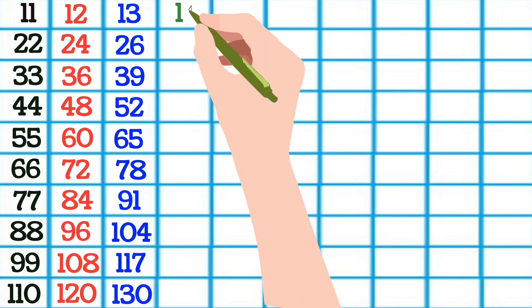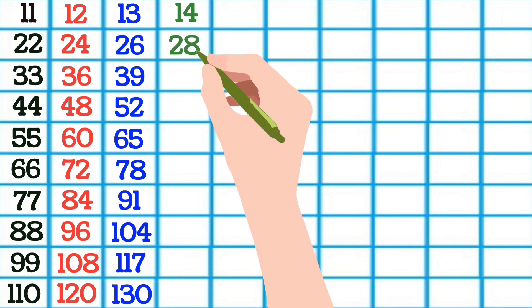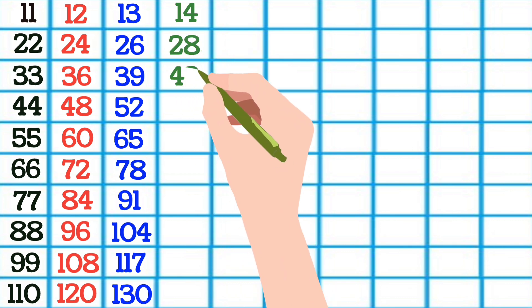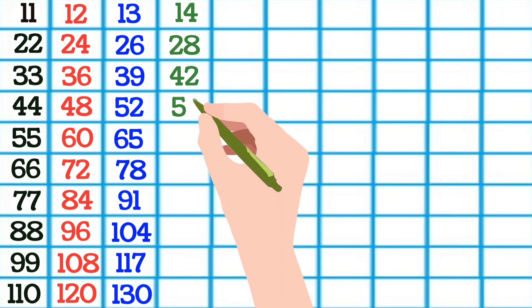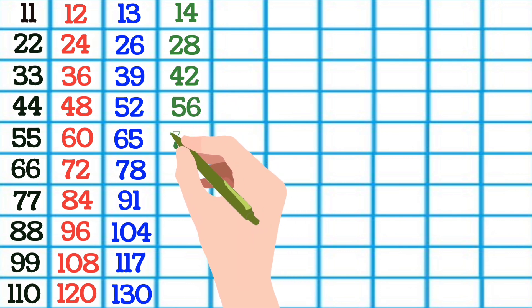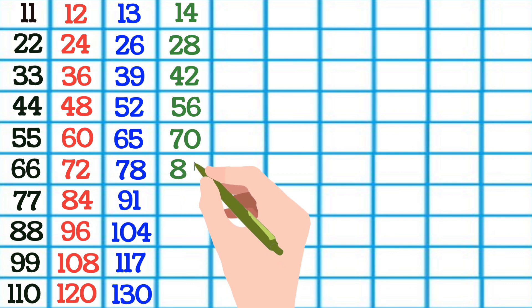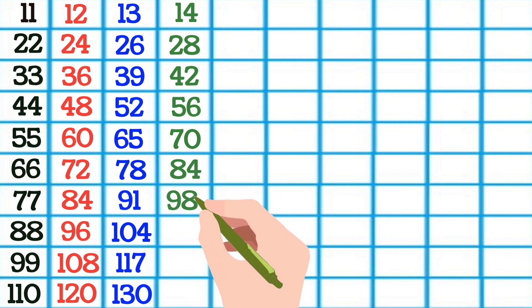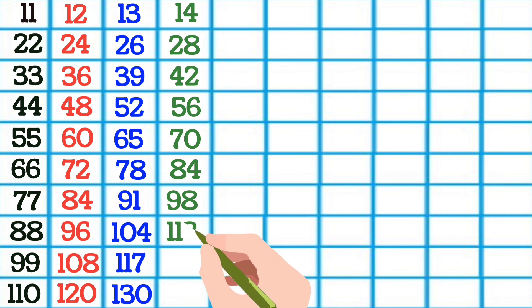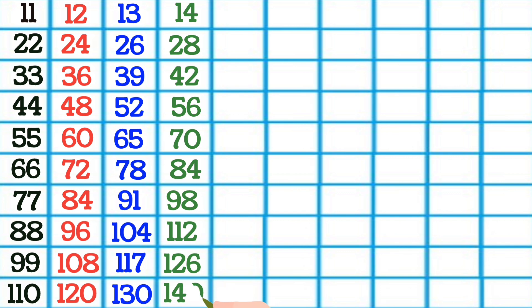14 1s are 14, 14 2s are 28, 14 3s are 42, 14 4s are 56, 14 5s are 70, 14 6s are 84, 14 7s are 98, 14 8s are 112, 14 9s are 126, 14 10s are 140.